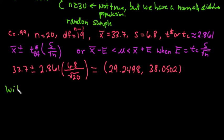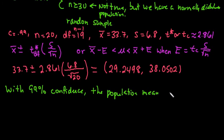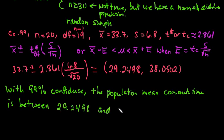So for this population, we can say with 99% confidence, the population mean commute time is between 29.2498 and 38.0502 minutes.